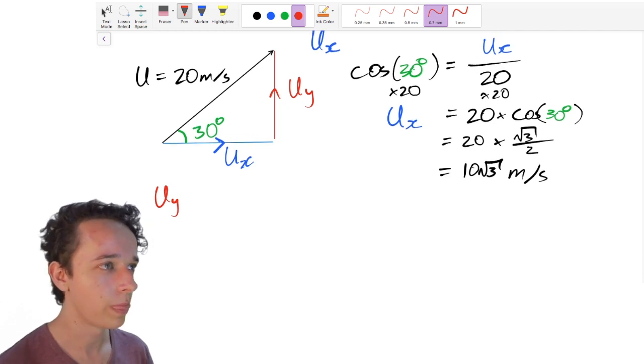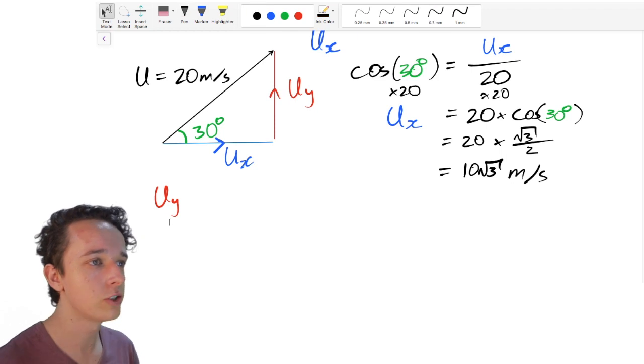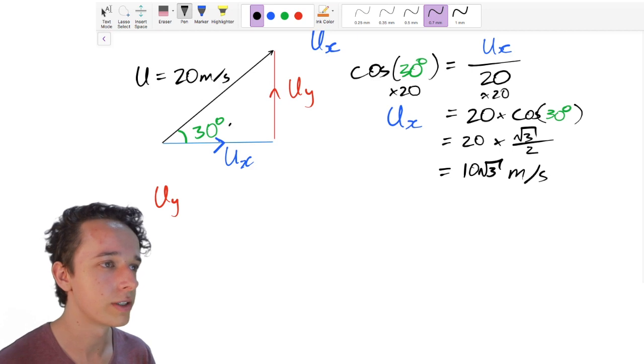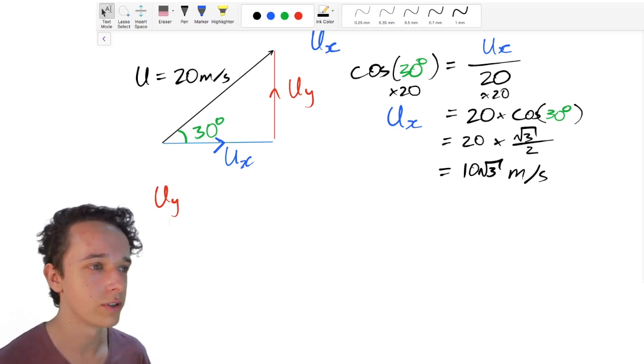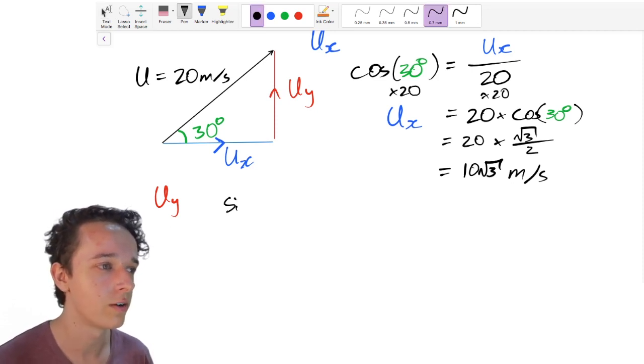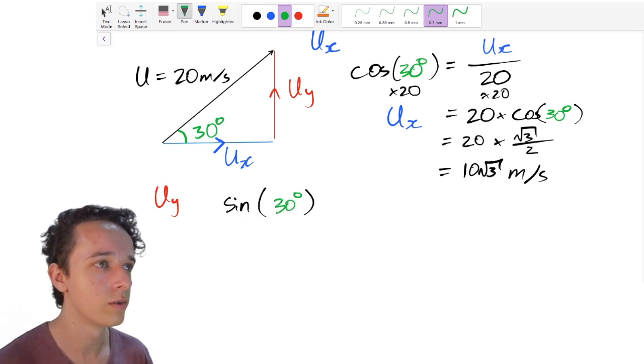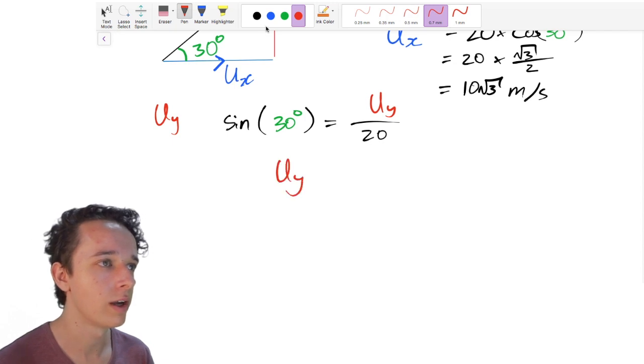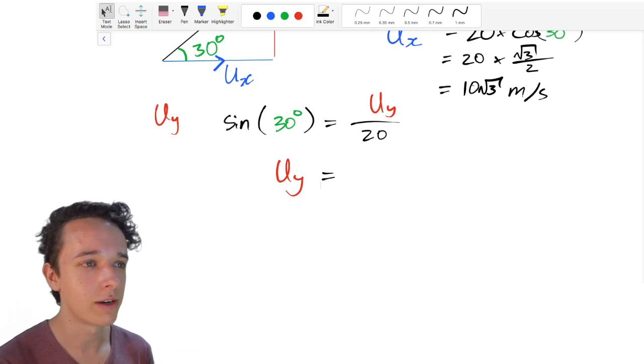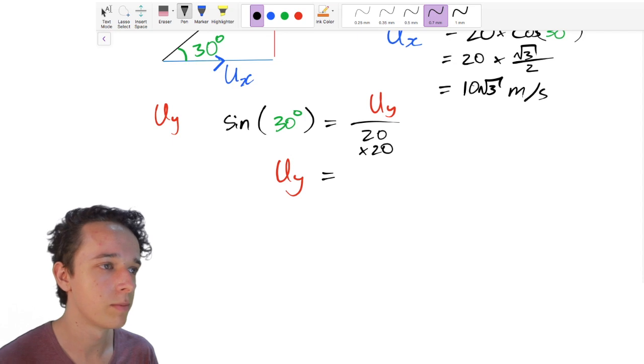Anyway, now to find u of y. How do we find u of y? Well, through a very similar process. So what is the relationship of u of y to this piece of data and this piece of data? Well, it's opposite to this angle 30 degrees here. And we know that this is the hypotenuse. So which trigonometric function employs opposite and hypotenuse? SOH, CAH, TOA, opposite and hypotenuse, that's sine. Okay, so sine of 30 degrees is equal to opposite over hypotenuse, which in this case is equal to u of y over 20. Okay, now we need to make u of y the subject of this equation. So, u of y equals. So what's happening to u of y? Right now it's being divided by 20, just like the last example. So we multiply this side by 20 and we multiply this side by 20 and we end up with 20 times sine of 30.